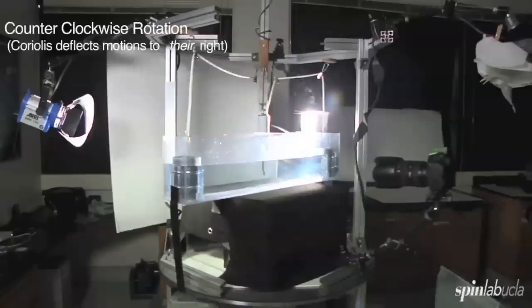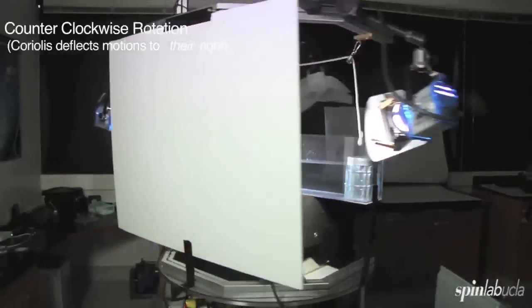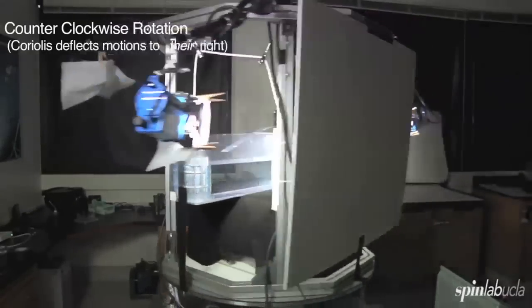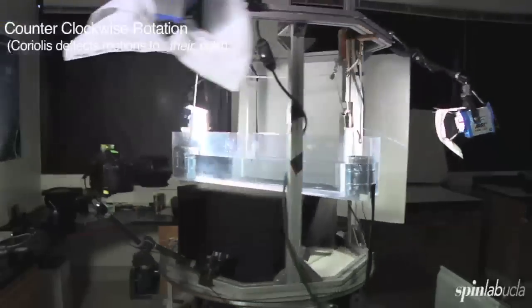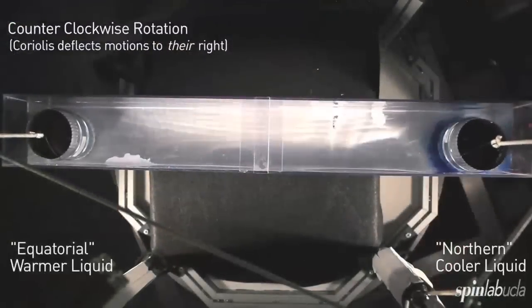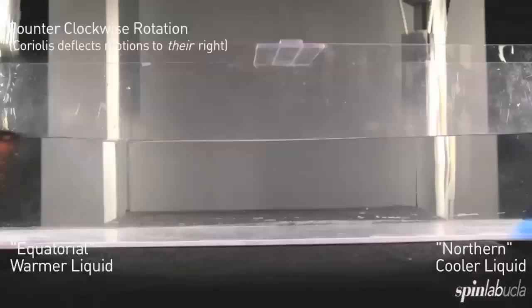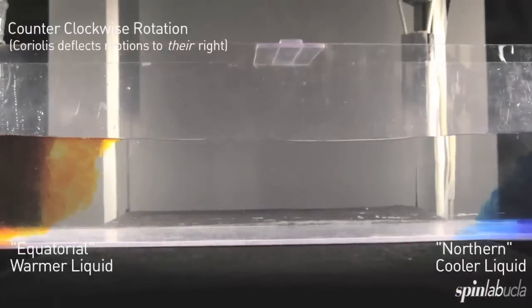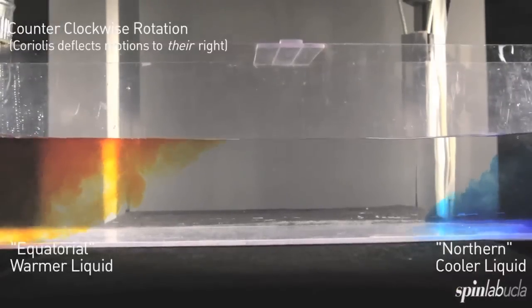You can now see that we have the exact same setup as before, but the whole setup is now placed on our rotating table. We pull up the containers and release the dye. And in side view, we see roughly the same overturning circulation.